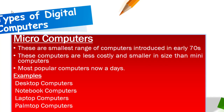The next type is micro computers. These are small, low-cost computers introduced in the early 1970s, and are the most popular computers nowadays. Examples include desktop computers, also known as personal computers, mostly preferred by home users. They are called desktop computers because they need to be placed on a desk.